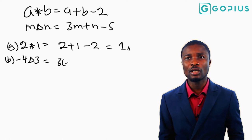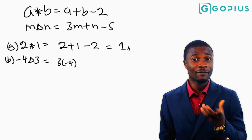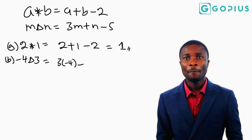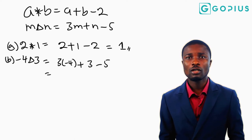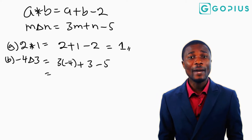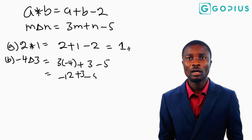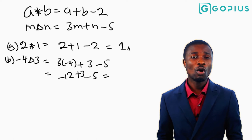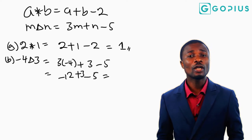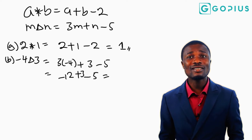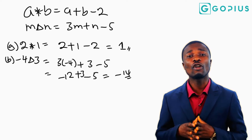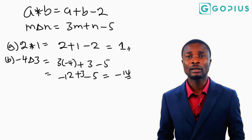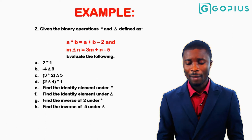So minus 4 delta 3 equals 3 times minus 4 plus 3 minus 5. That gives us minus 12 plus 3 minus 5, which equals minus 9 minus 5, which equals minus 14. So minus 14 is the value for minus 4 delta 3.